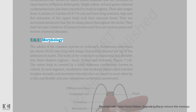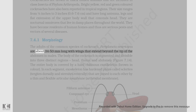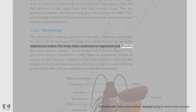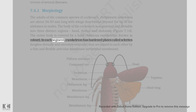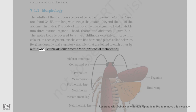The adults of the common species of cockroach, Periplaneta americana, are about 34 to 53 millimeters long with wings that extend beyond the tip of the abdomen in males. The body of the cockroach is segmented and divisible into three distinct regions: head, thorax, and abdomen. The entire body is covered by a hard chitinous exoskeleton, brown in color. In each segment, the exoskeleton has hardened plates called sclerites (tergites dorsally and sternites ventrally), joined to each other by a thin and flexible articular membrane (arthrodial membrane).